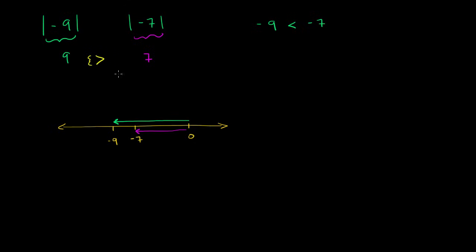Another way to think about it is that if you take the absolute value of a number, it's really just going to be the positive version of that number. The absolute value of 9 equals 9, and the absolute value of negative 9 is also equal to 9. Visually, both numbers are exactly 9 away from 0 — 9 to the right of 0, and 9 to the left of 0.